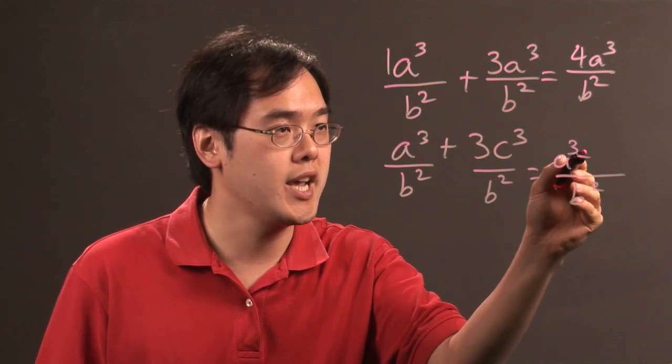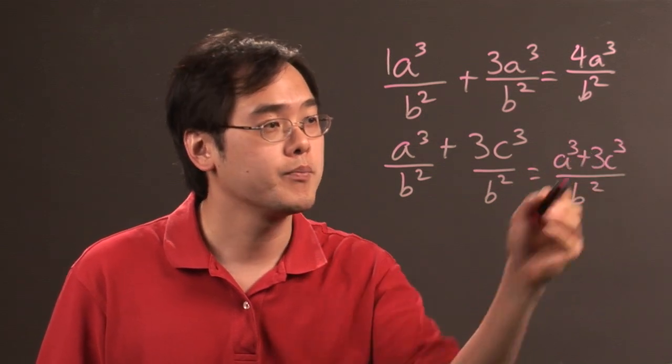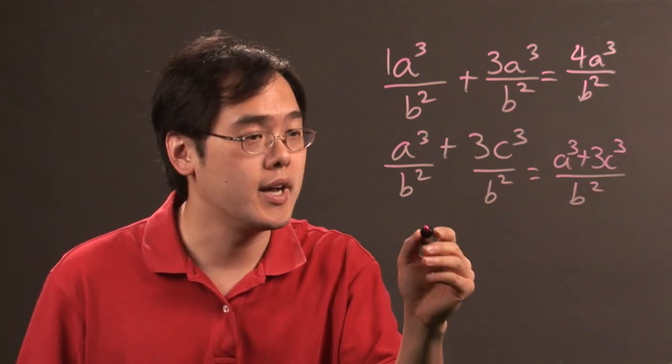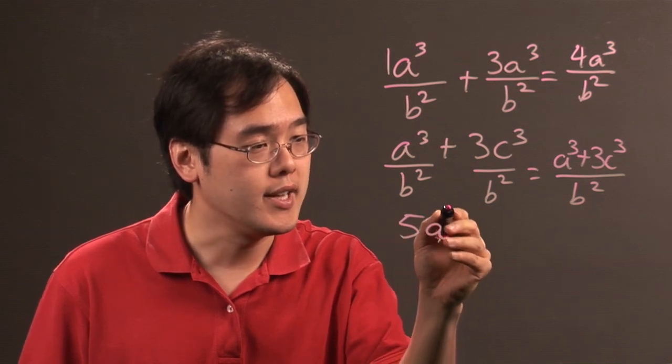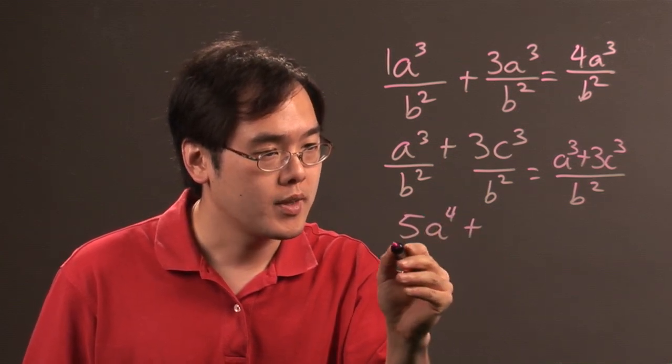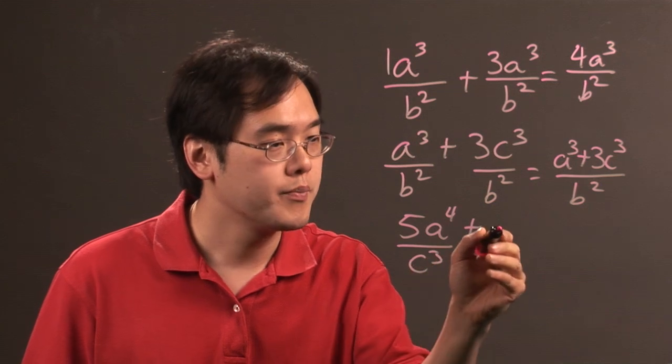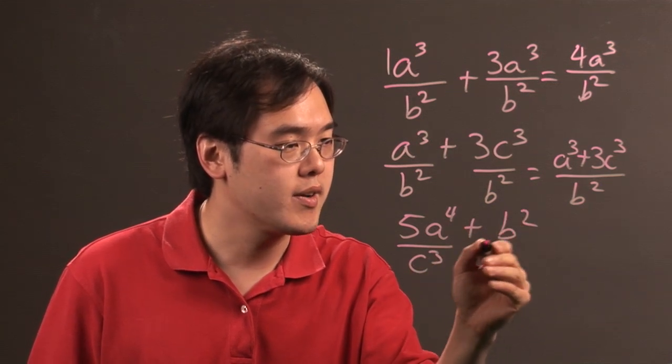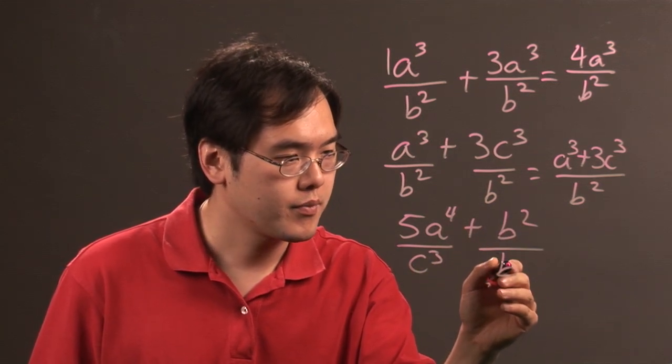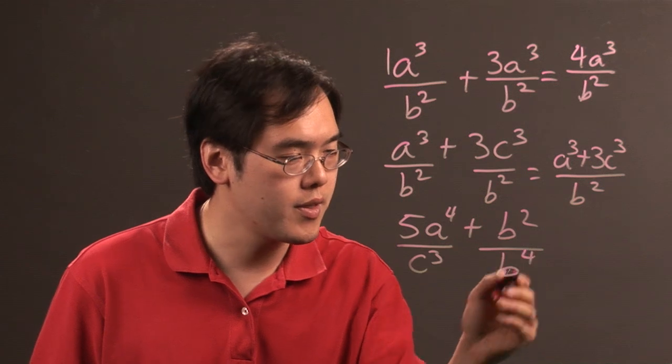Okay, now if you have something like 5a to the fourth over c cubed plus b squared over b to the fourth, you have a situation where the denominators don't match and the numerators don't match either.